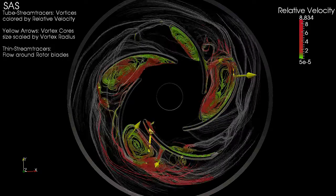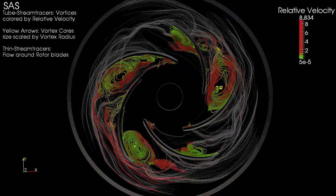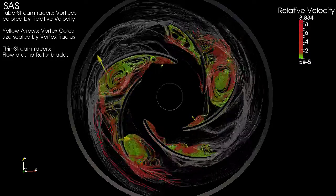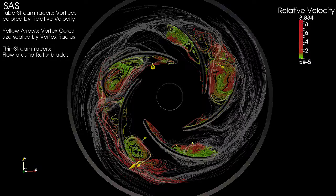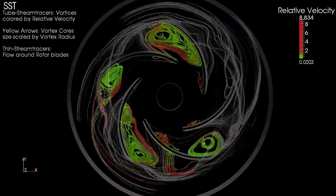We added very thin streamlines colored in translucent white to provide a comprehensive understanding of the flow structure around the rotor blades and vortices. The streamlines flow from the inner edges of the rotor blades towards the outer edges, with increasing separation of flow.